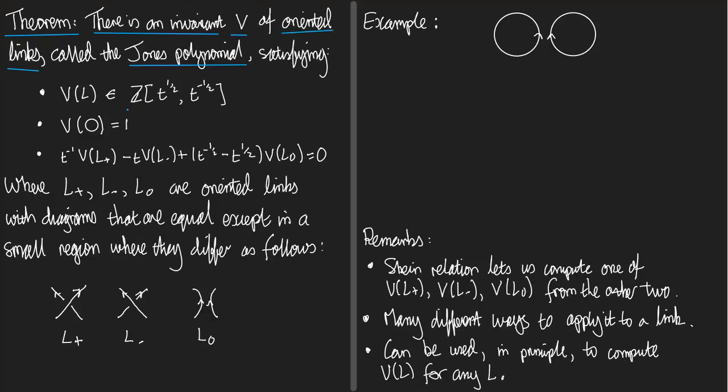First of all, the Jones polynomial of any link is in this ring, Z[t^±½, t^-±½]. It means it's a polynomial in T, where the powers you can see in T are multiples of one-half or minus one-half. The second property is that the value of the Jones polynomial on the unknot is one. And the third property is this big equation here. It's called the skein relation.